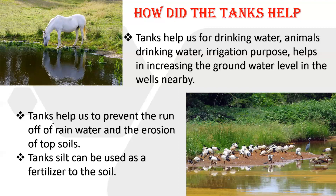Tanks help us to prevent the runoff of rainwater and soil erosion. These tanks store the rainwater that is running off, stopping soil erosion. Tank silt can be used as a fertilizer for the soil. The silt which is formed near the tanks is used as a fertilizer. You can see here many birds and how the silt is formed and used as a fertilizer to the soil.